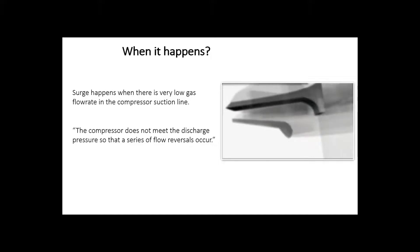Surge happens when we have very low gas flow rate in the compressor suction line. This minimum gas flow does not fill the impellers fully, so the compressor is not able to displace the amount of gas trapped inside. The flow, instead of going to discharge piping, experiences reversals and goes back to fill the empty impellers. Again, the compressor tries to deliver it to discharge line and the same process repeats itself.